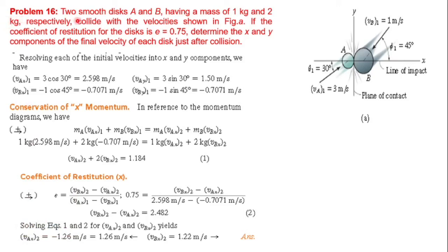Two smooth disks A and B having masses of 1 kg and 2 kg respectively collide with the velocities shown in the figure. Initial velocity of disk A is 3 meters per second at an angle, and disk B is moving at about 1 meter per second. If the coefficient of restitution for the disks is 0.75, determine the x and y components of final velocity of each disk just after collision.